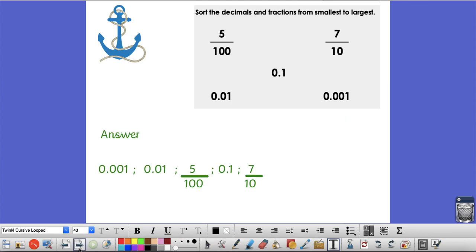So your answer should be 0.001, then 0.01, then 5 hundredths, then 0.1, then 7 tenths.